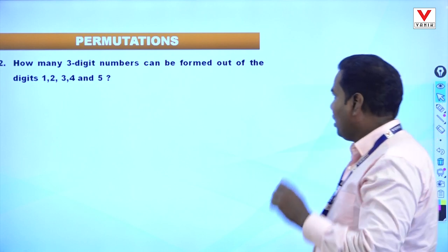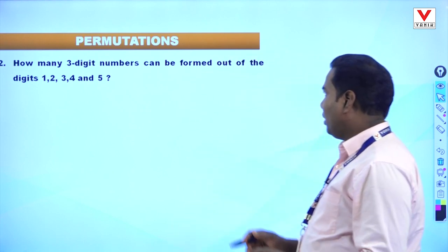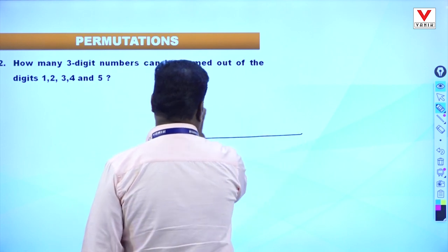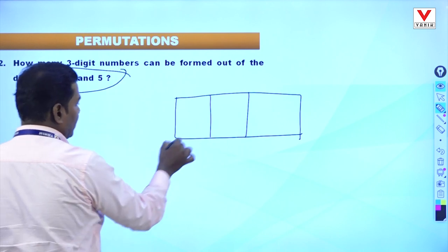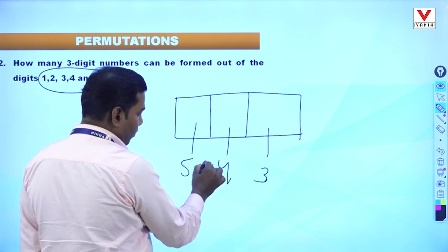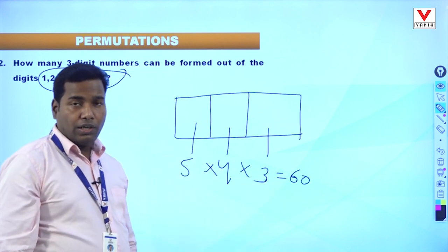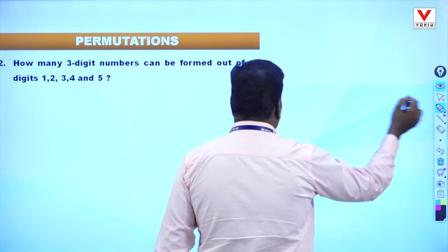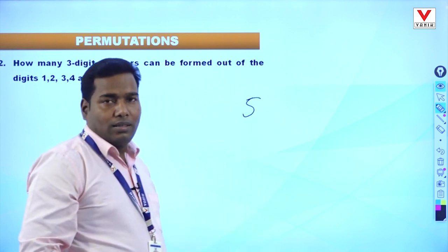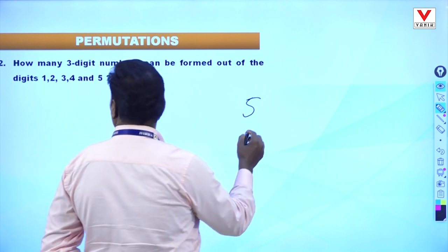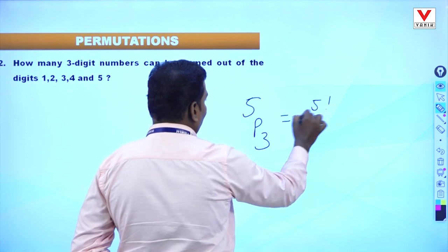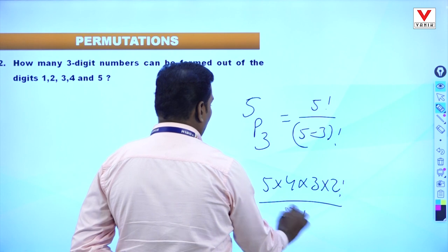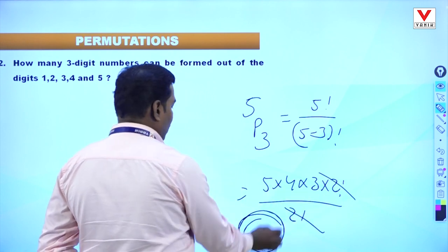Question 2: How many 3-digit numbers can be formed out of the digits 1, 2, 3, 4, 5? There are 5 digits and we arrange 3 at a time. In the first place write 5, then 4, then 3: 5 into 4 into 3 = 60. By formula, 5P3 = 5 factorial divided by 2 factorial = 5 into 4 into 3 = 60. The answer is 60.